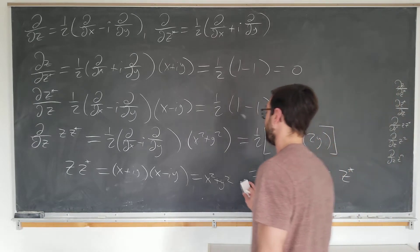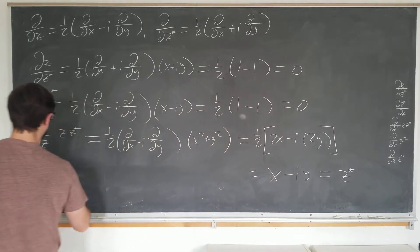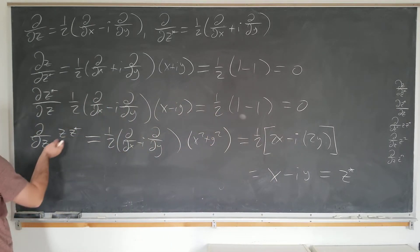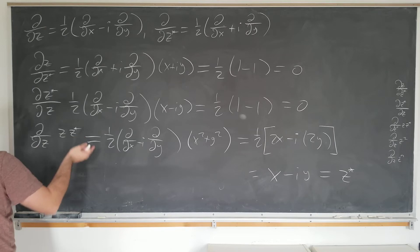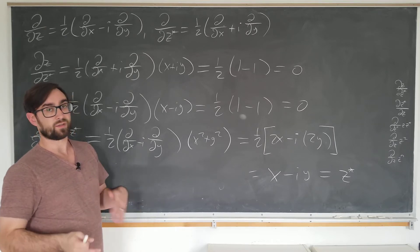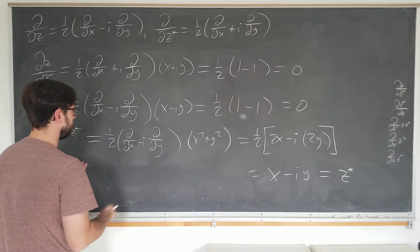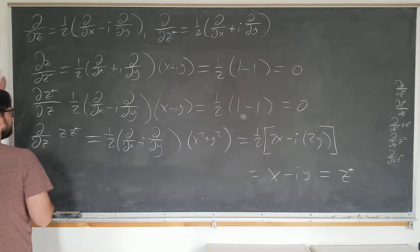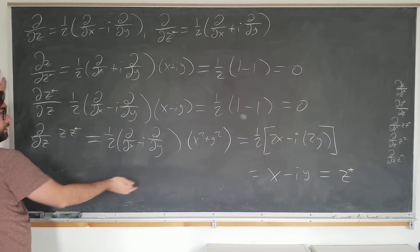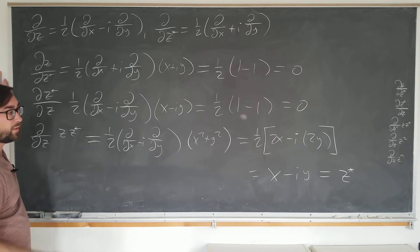So it behaves the way that you think it would with the product. If we take a product of these variables, obviously it's going to generalize to any number of variables. So we're not going to prove this. d by dz of z z star is simply z star, exactly what you would expect it to be.